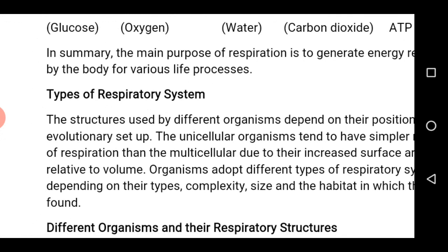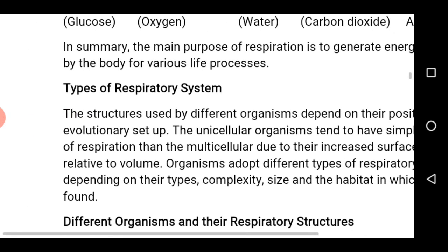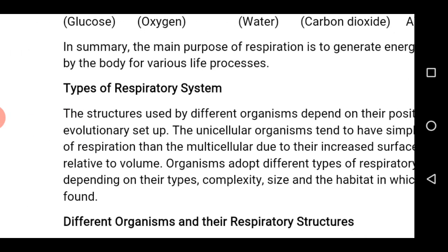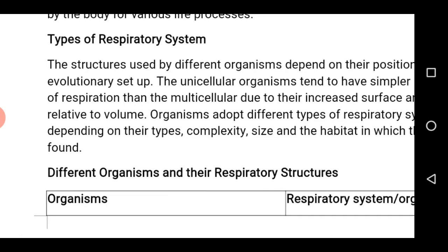Types of respiratory systems. The structures used by different organisms for respiration differ. Unicellular organisms tend to have a simpler mode of respiratory system, while multicellular organisms have a more complex type. An organism uses the type of respiratory system depending on the type, complexity, size and habitat of such organism.